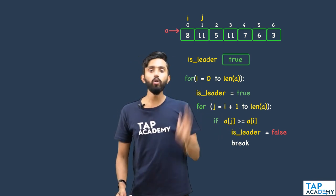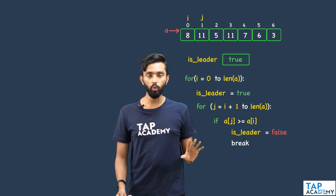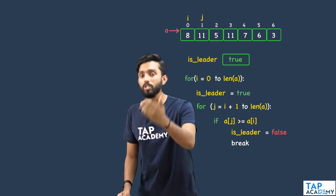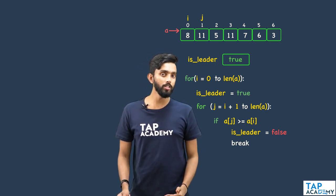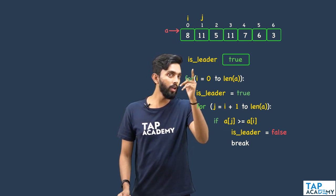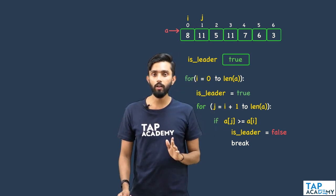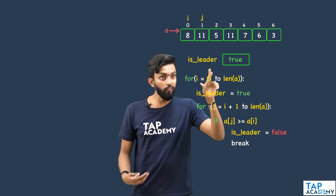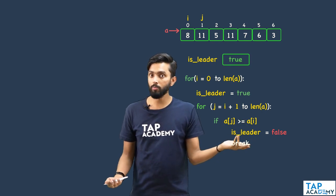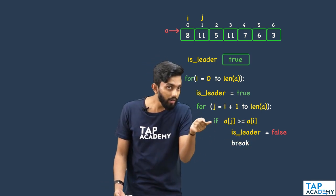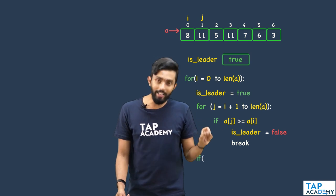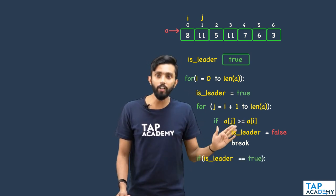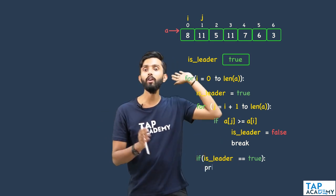After breaking out of the loop, I check whether my assumption was right or wrong by looking at isLeader. If isLeader is true, then the ith element was a leader — print a[i]. If it became false, then my assumption was wrong and I do not print it.